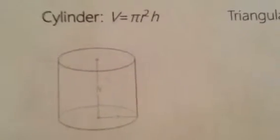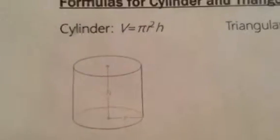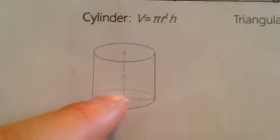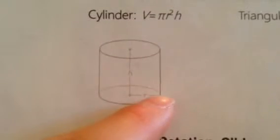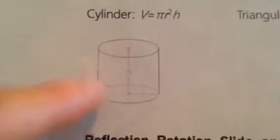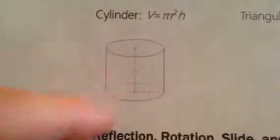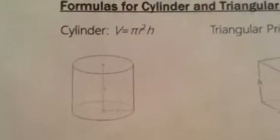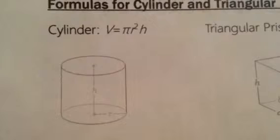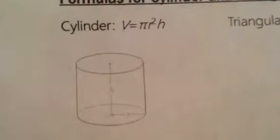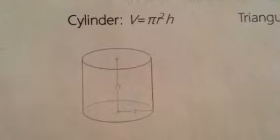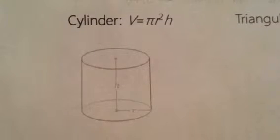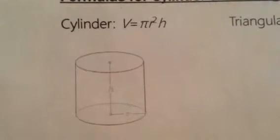r squared represents the radius — the line extending from the center point of the base toward the outside edge. The height is the distance of the cylinder from one base to the other. The formula for the area of a circle is A = πr². That's how you find the area of a circle and the volume of a cylinder.